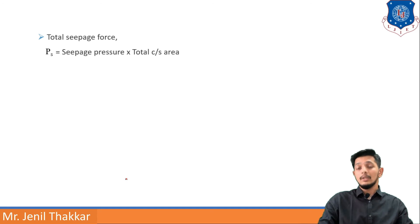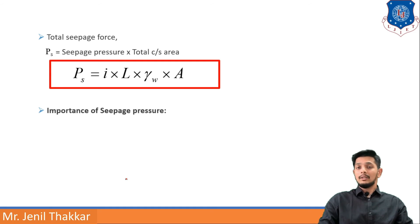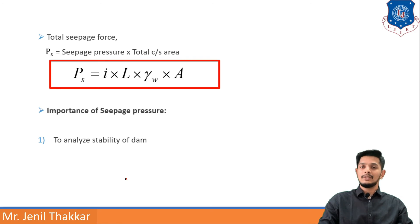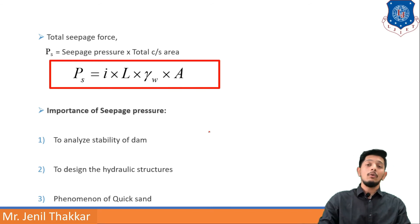Total seepage force is: Ps = i × L × γw × A, where A is total cross-sectional area. Seepage pressure is useful to analyze the stability of dams, to check whether existing dams are stable, and to design hydraulic structures such as dams and canals.